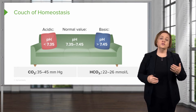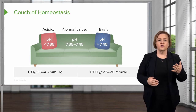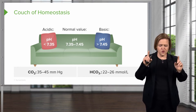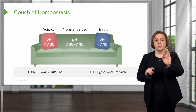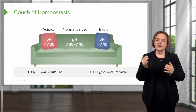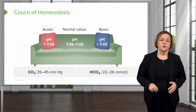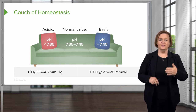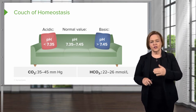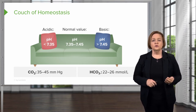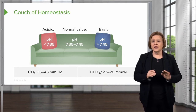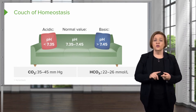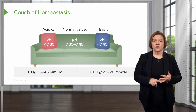Normal levels for CO2, carbon dioxide, are 35 to 45. I was so excited when I first figured that out because pH of 7.35 to 7.45 — it's super easy to remember the normal CO2: 35 to 45. Now the normal bicarb is 22 to 26. So before we really get rolling, make sure you've written down those three values: the normal pH, the normal carbon dioxide, and the normal bicarb.